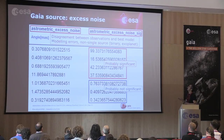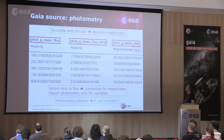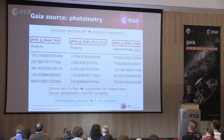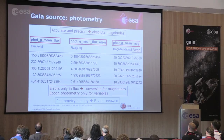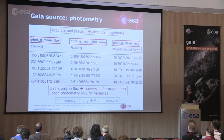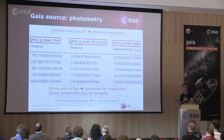There is also something called the excess noise — we'll learn about that in the astrometry splinters. Some metrics tell you when this excess noise — basically how well the solution agrees with the observations — is significant or not. We also have photometry; there will be a plenary on that. We work in the Vega system for Gaia Data Release 1. Importantly, we only provide errors for the fluxes; for the magnitudes you have to compute them yourself using the recipes provided in the documentation.